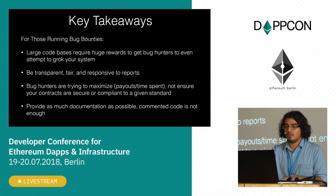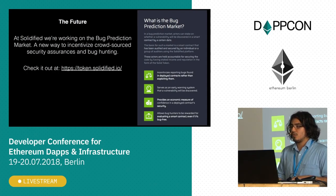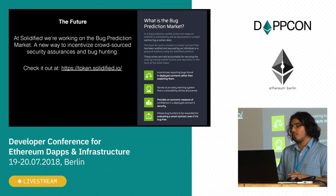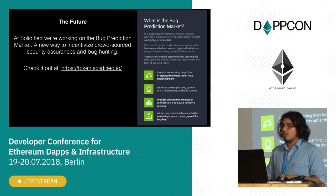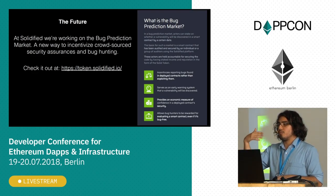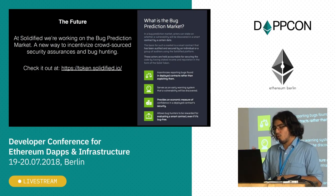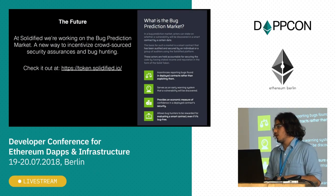Provide as much documentation as possible — commented code is not enough. At Solidified, we're working on a bug prediction market: a new way to incentivize crowdsourced security assurance and bug hunting. If you open up prediction markets on whether or not a security vulnerability will be discovered by a certain date, you open up a way for people to profit off of ensuring code is bug-free, by buying tokens that reward you if no bug is found. So you can actually make sure people will spend the time because they'll be rewarded either way. Thanks.